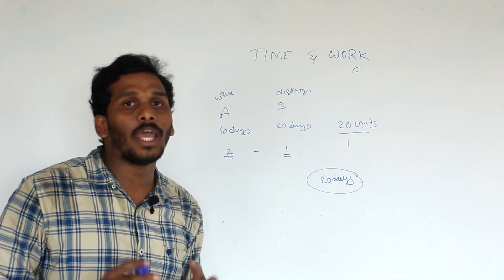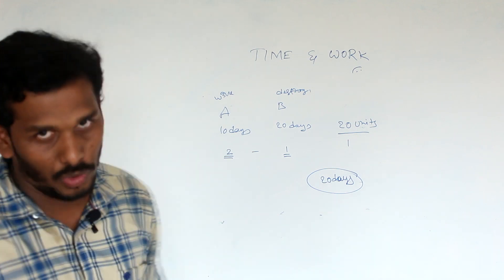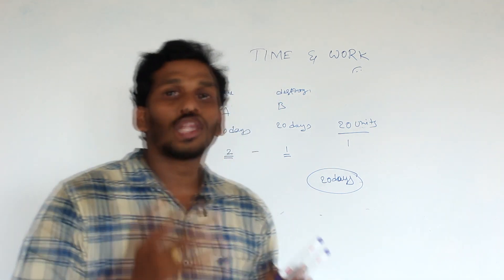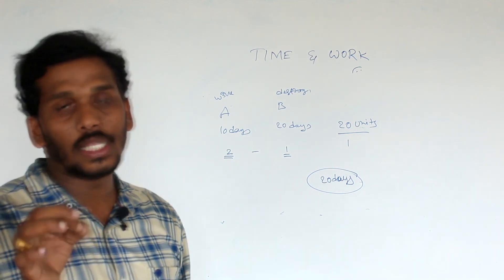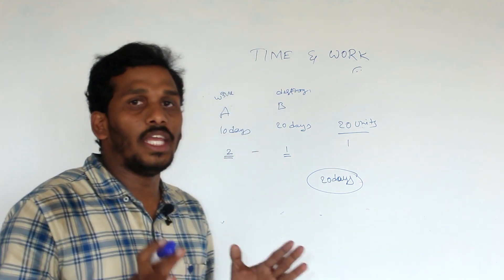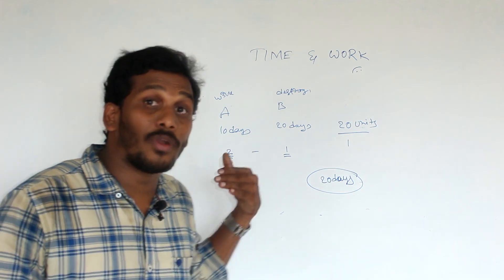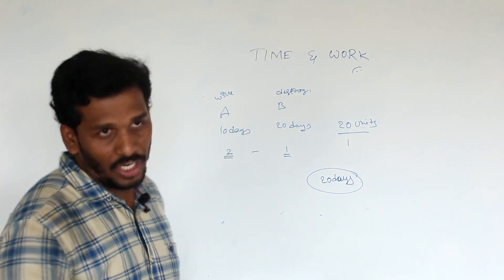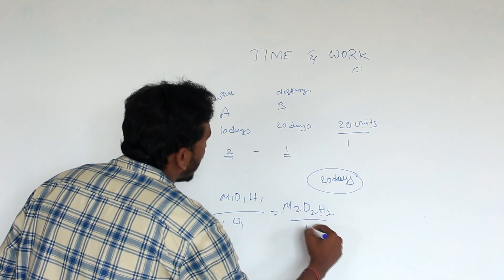Summary: The first main point is time and work. Salaries are given according to the capability ratio — this is the most important point. The chain rule formula is M1 × D1 × H1 ÷ W1 = M2 × D2 × H2 ÷ W2, where M is men, D is days, H is hours. Men and days are in inverse proportion; days and hours are in direct proportion. This formula is used for chain rule problems.